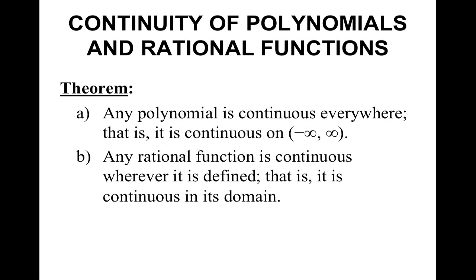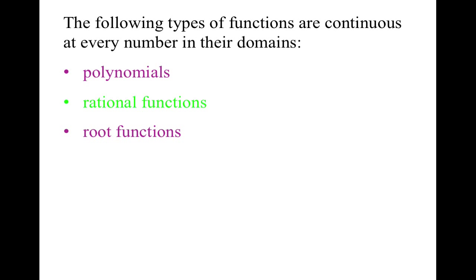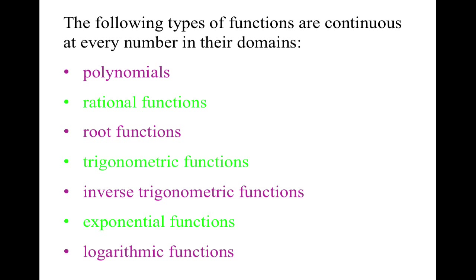A rational function is continuous everywhere it is defined — that is, it is continuous in its domain. For example, 1 over x is continuous everywhere in its domain. Of course, not at x equals 0, but x equals 0 is not in its domain. Therefore, the following types of functions are continuous at every number in their domains: polynomials, rational functions, root functions (square root, cube root, etc.), trig functions, inverse trig functions, exponential functions, and log functions.